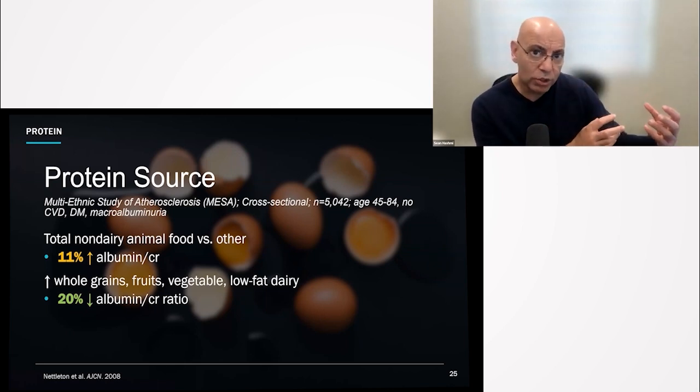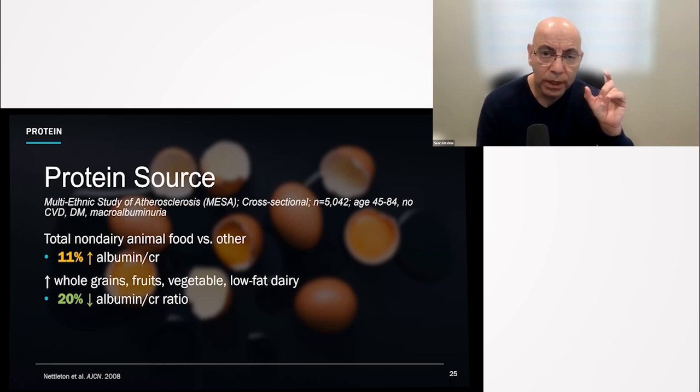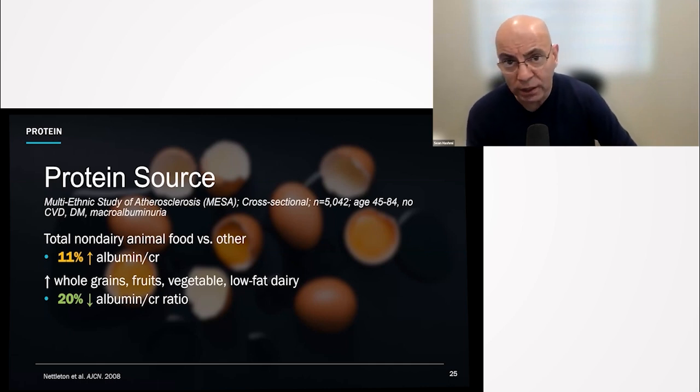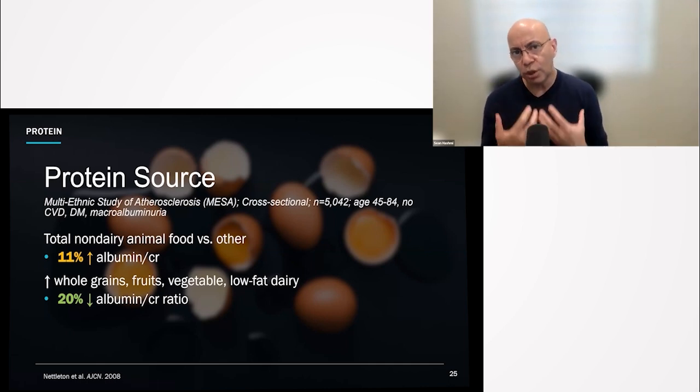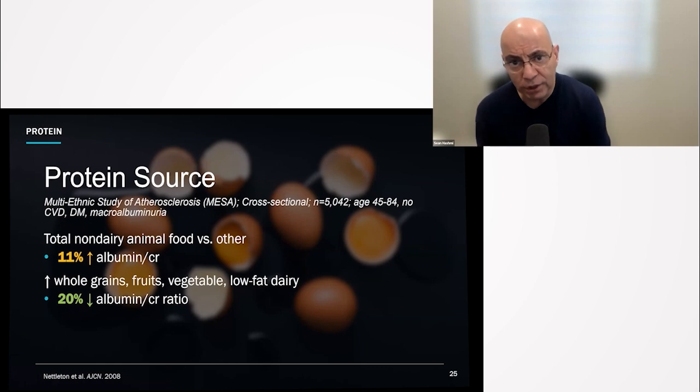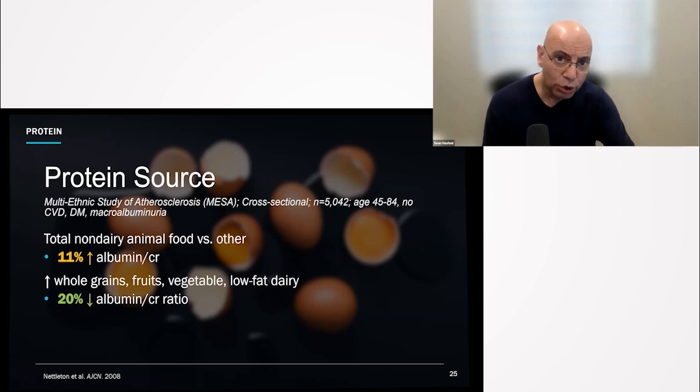Going back to that same question we talked about before, protein in the urine is one of the best predictors for how fast your kidneys are going to decline. So if you want to slow down the rate of decline of your kidney disease, you want to control the protein in the urine. Diet is a very important portion of that.